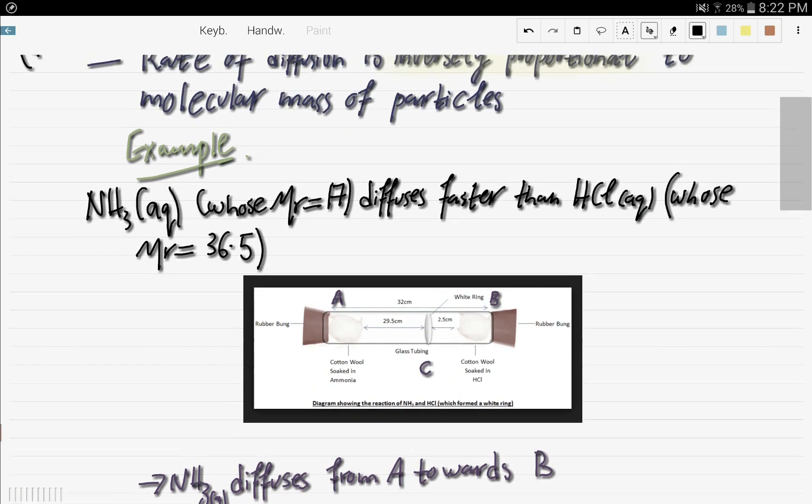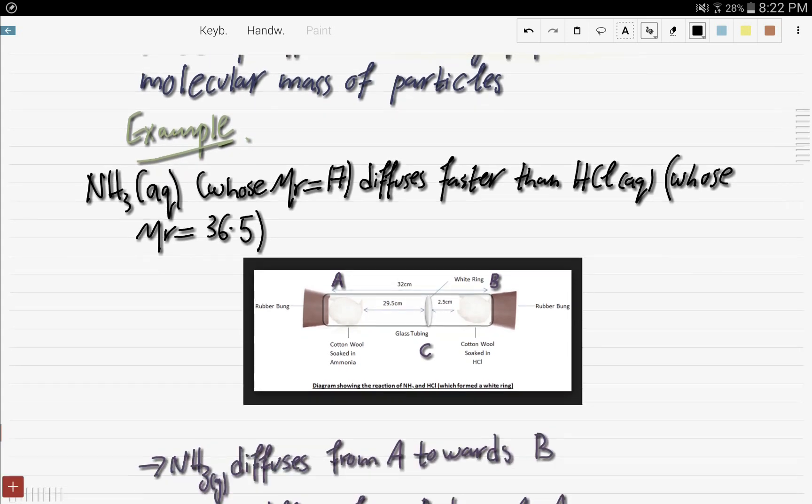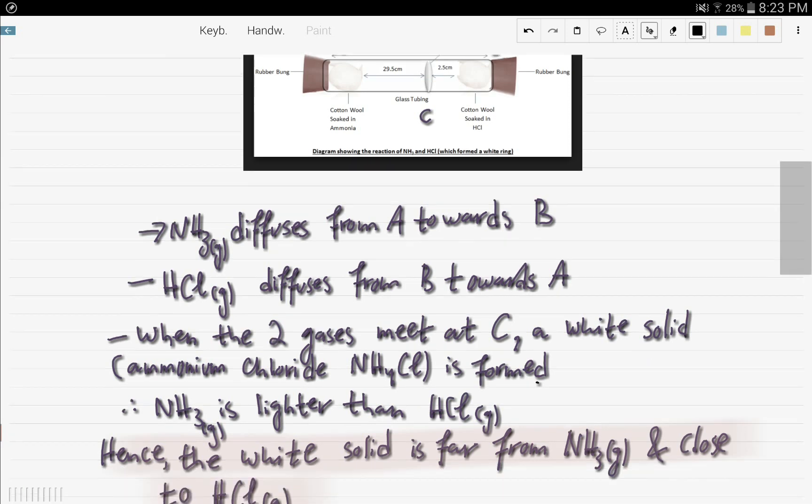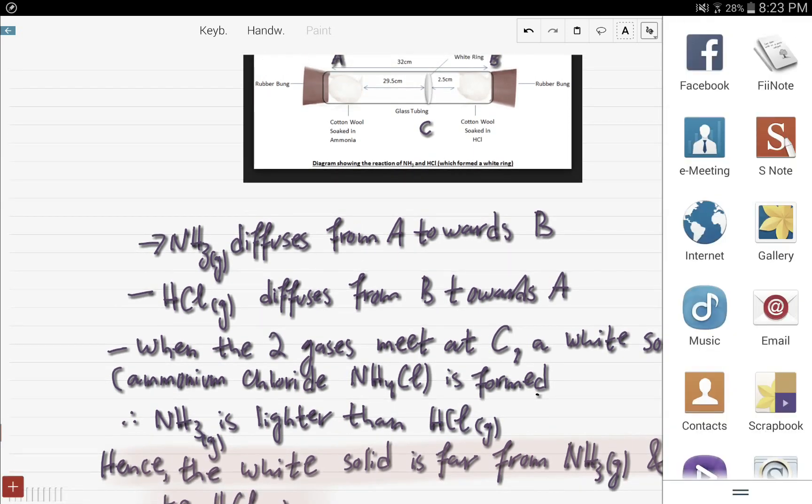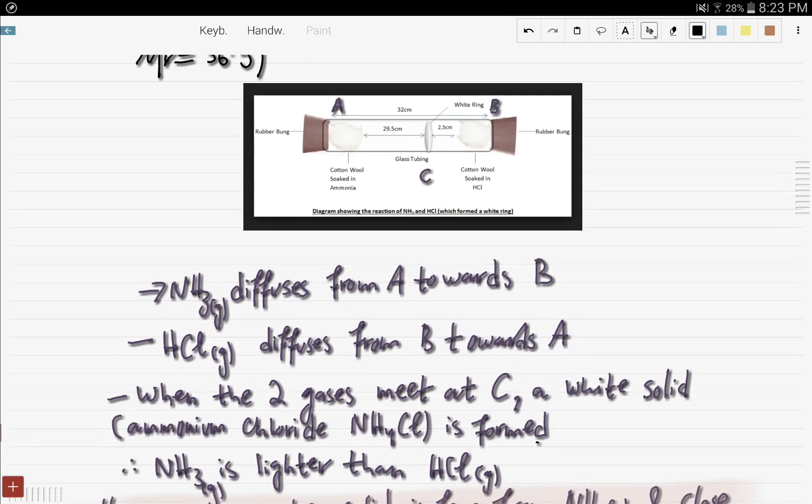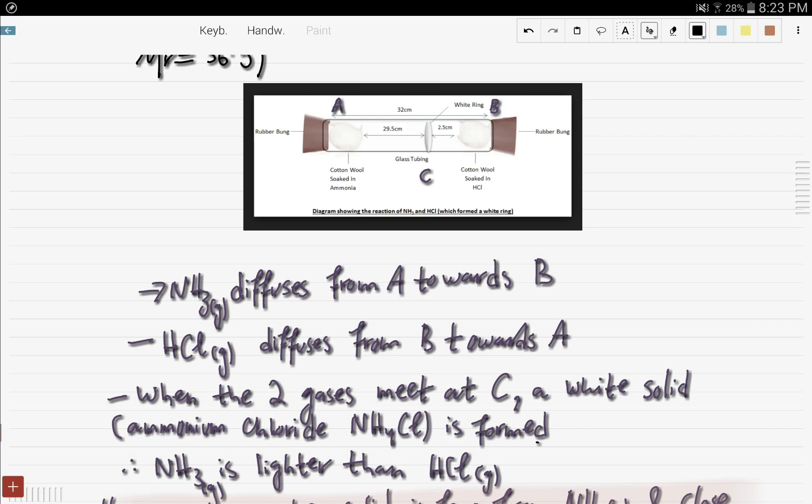So according to the rule that we just said, NH3 will diffuse faster because it is lighter. And as you can see here, NH3 diffuses from A towards B, and HCl, the gas, diffuses from B towards A. And when the two gases meet at C, a white solid, ammonium chloride, NH4Cl, is formed. And therefore, because it is closer here, the white solid is far from NH3 and closer to HCl. As you can see here, it's close to HCl, but far from the NH3 cotton wool.